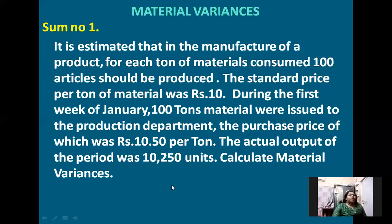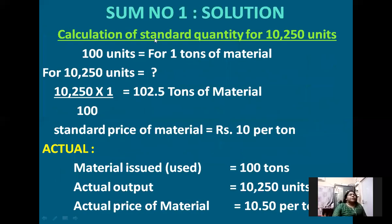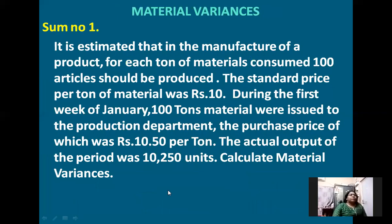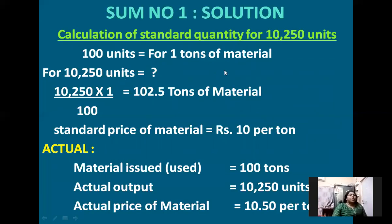How are we going to work out this problem to calculate the material price variance? We need to check the problem — whenever the question is calculate material variance, check whether the standard quantity is given for the actual output. We don't have the standard quantity for the actual output. The actual output as per this problem was 10,250 units, so we need to calculate the standard quantity for 10,250 units.